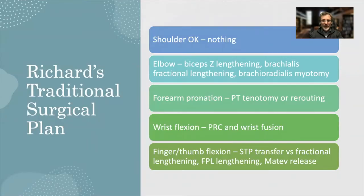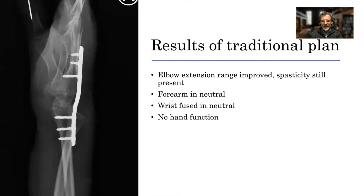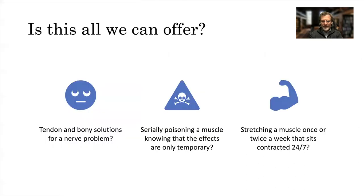Under this paradigm, what would Richard get? Biceps lengthening, brachialis fractional lengthening, and brachialis myotomy would improve his contracture. Forearm pronation improved by pronator teres tenotomy and rerouting, and wrist flexion with PRC and wrist fusion. Finger and thumb flexion corrected with STP transfer versus fractional lengthening, FPL lengthening, and the METEV release. Results of the traditional plan: improved elbow extension range, spasticity still present, forearm in neutral, wrist fused in neutral, and really no hand function.